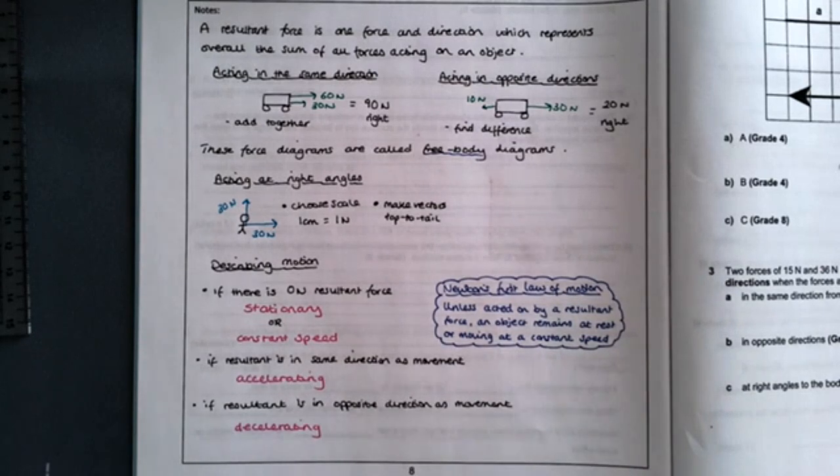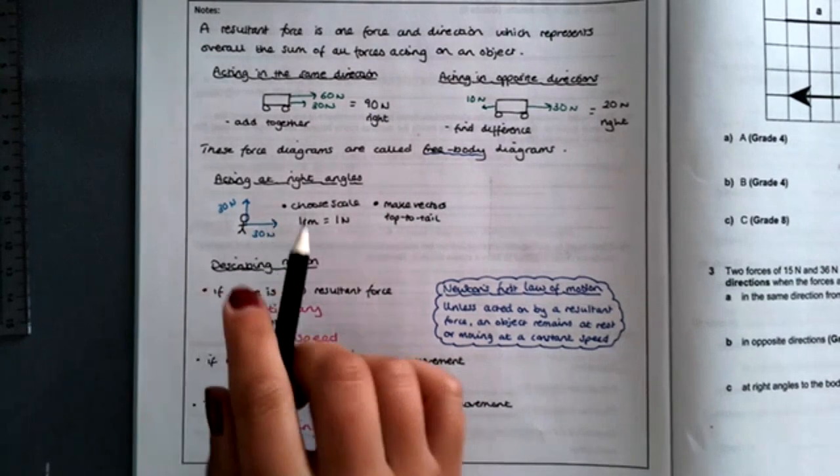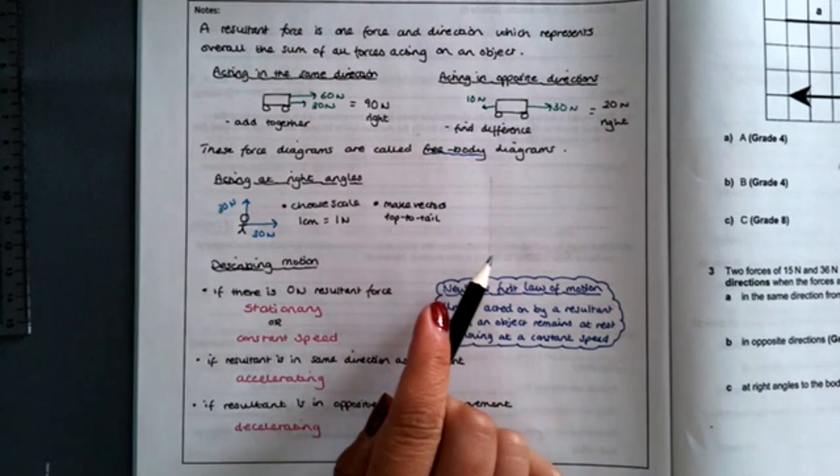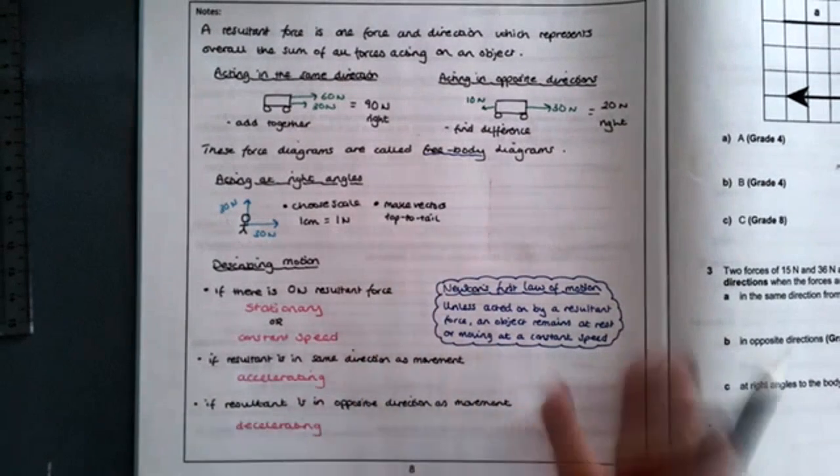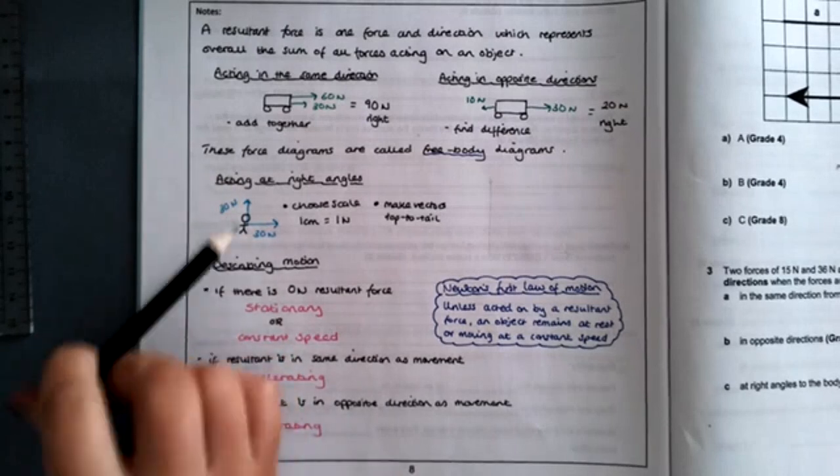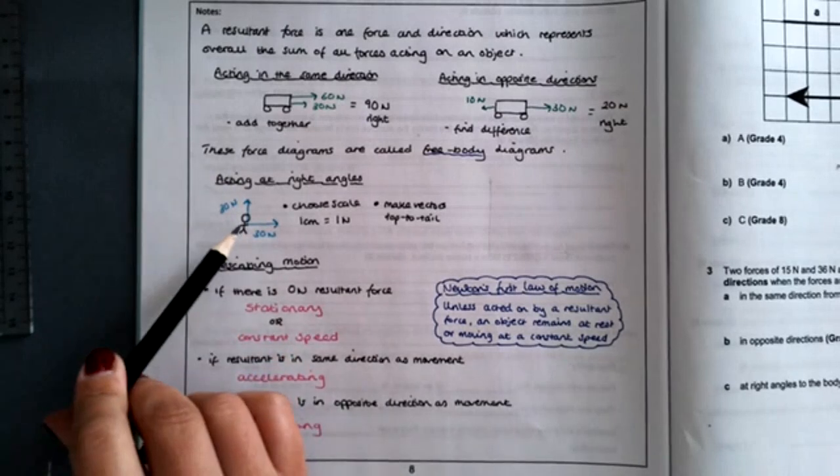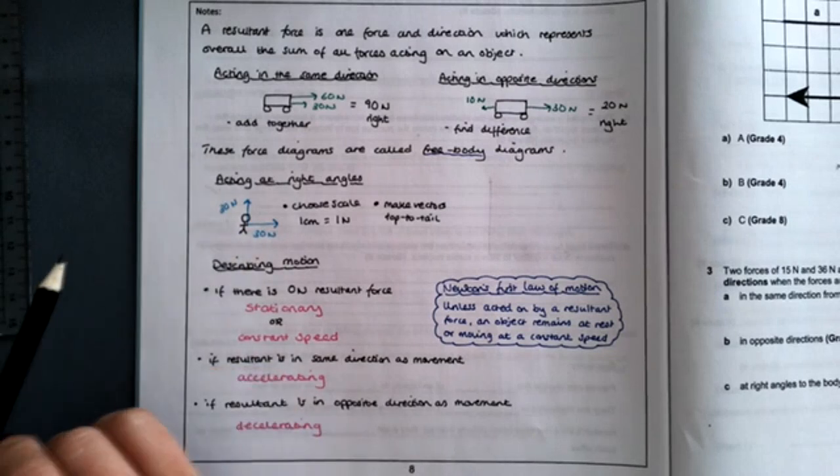What I want to go through with you is forces acting at right angles. As you can see, I started to do this myself and then decided to record this video. So two forces acting at right angles—this is the example from the long video in the PowerPoint: 30 newtons to the right and 30 newtons going upwards.